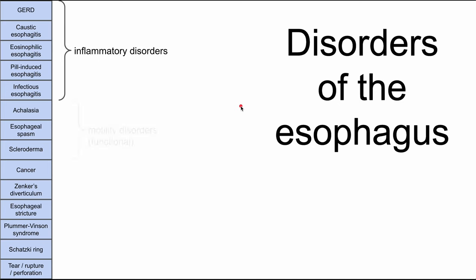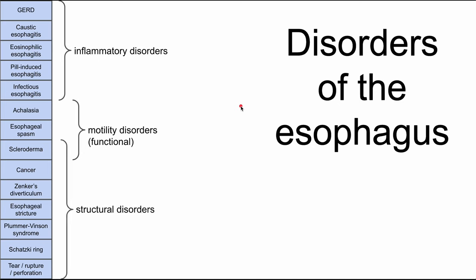In general, you can group these disorders into three categories. First, inflammatory disorders — disorders caused by too much inflammation. Then there are motility disorders, which are functional disorders where the esophagus isn't doing its normal function of peristalsis to get stuff down into the stomach. Lastly, structural disorders, where something is either occluding or restricting the passage of contents down into the stomach. So those are loosely defined categories for many disorders of the esophagus.